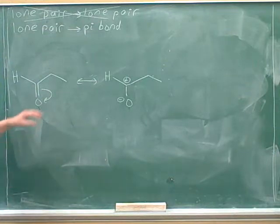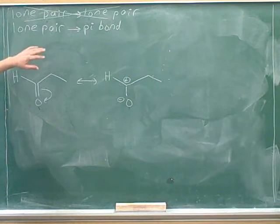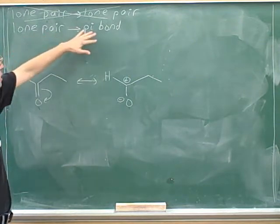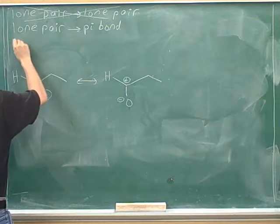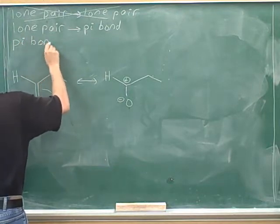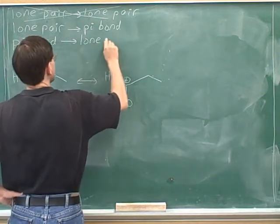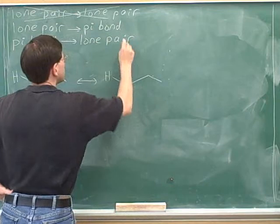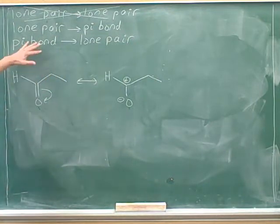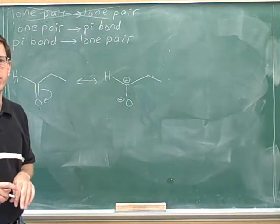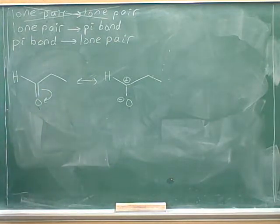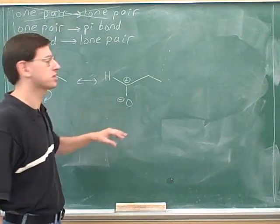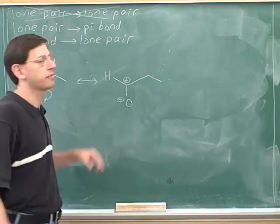We now have a different type of arrow than what we've been working on previously. Previously we learned about arrows where the electrons were coming from a lone pair and going to a pi bond. But now we have the reverse — the electrons are coming from the pi bond and going to a lone pair. We put the tail of the arrow on the pi bond, and we put the head of the arrow on the atom. Remember that you don't have to draw in the lone pair; you just put the correct formal charge in and people are expected to know how many lone pairs there are.